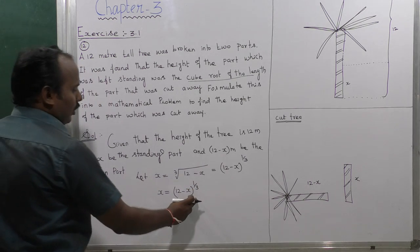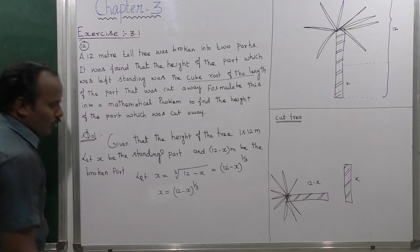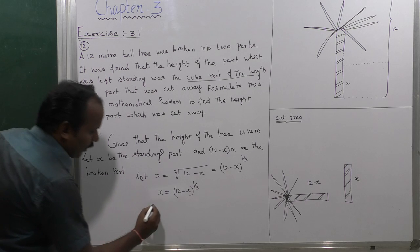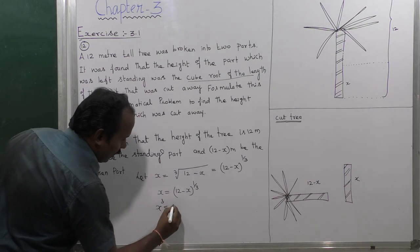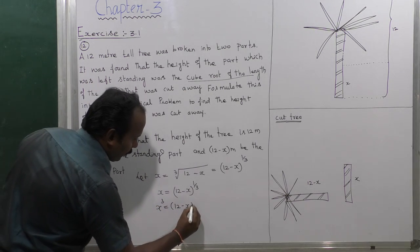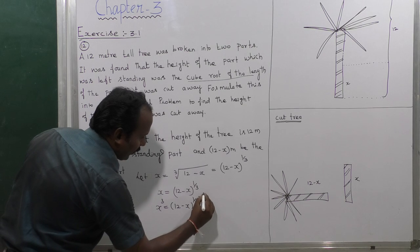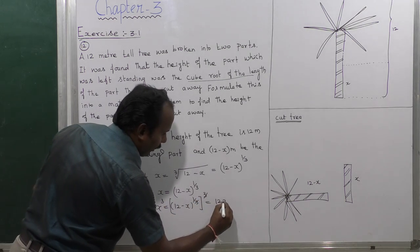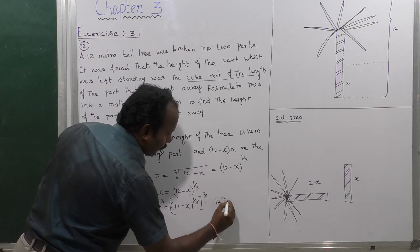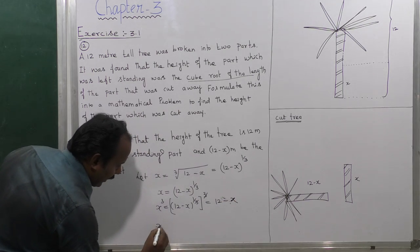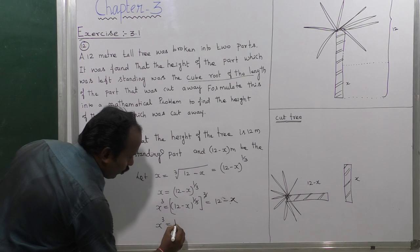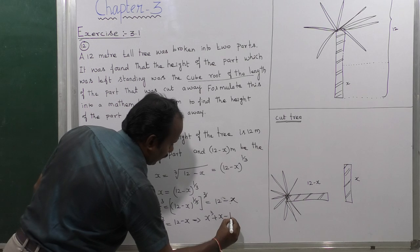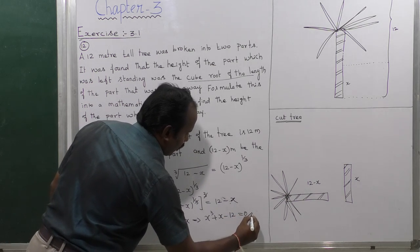That is the broken terms; this is the standing terms. Next, multiply both sides by power 3. Then x cubed equals 12 minus x to the power 1 by 3, all raised to the power 3. The 1/3 and 3 cancel, so this equals 12 minus x. That means x cubed equals 12 minus x, which implies that x cubed plus x minus 12 equals zero.